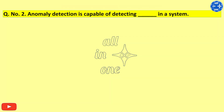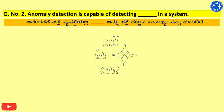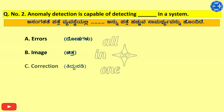Question No. 2. Anomaly detection is capable of detecting dash in a system. Options: A. Errors, B. Image, C. Correction, D. Lines. Right answer is Errors.